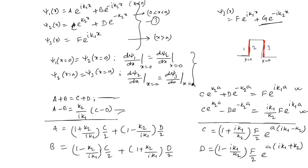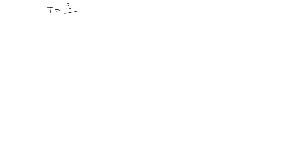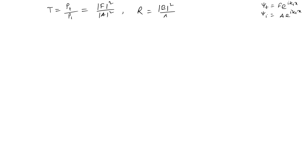Now we know the values of C and D in terms of F, so A and B can also be written in terms of F. We are interested in finding the transmission coefficient T and reflection coefficient R. The transmission probability is the ratio of the transmitted wave amplitude to the incident wave amplitude: T = |F|²/|A|² and R = |B|²/|A|².